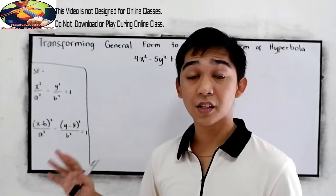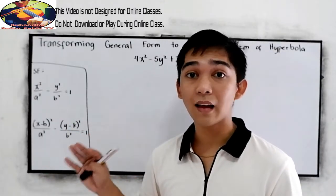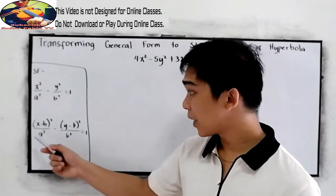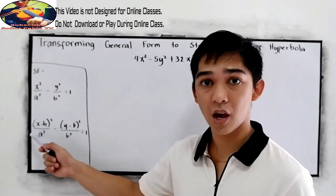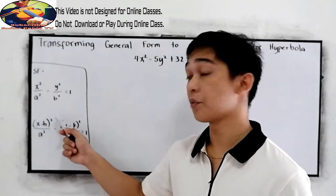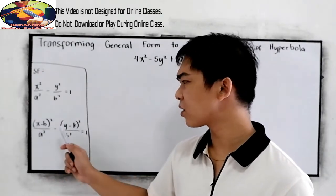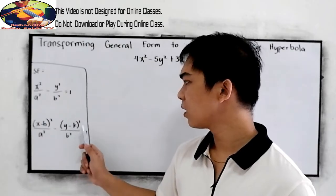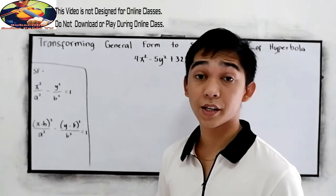And if the center is not located at the origin, we have the standard form for (h,k): quantity x minus h raised to 2 over a squared minus quantity y minus k raised to 2 over b squared is equal to 1.